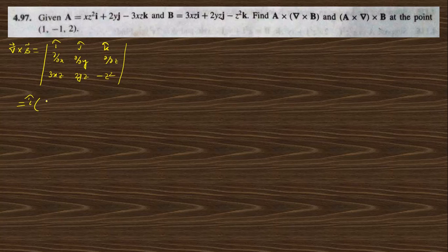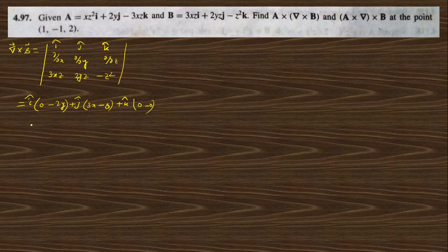So for I cap we get del/dy of 0 minus del/dz of (2yz) giving minus 2y; plus J cap from del/dz of (3xz) giving 3x; plus K cap where del/dx and del/dy both give 0. So the curl of B is minus 2y î plus 3x ĵ.